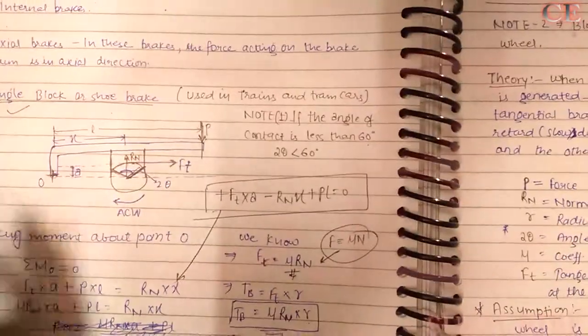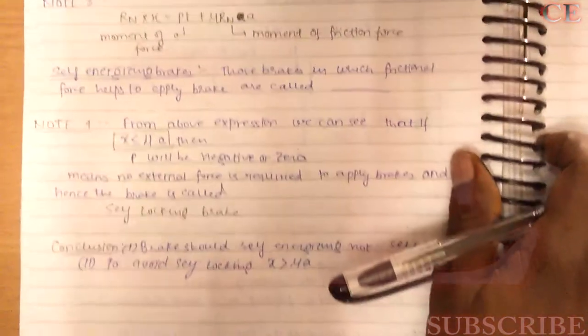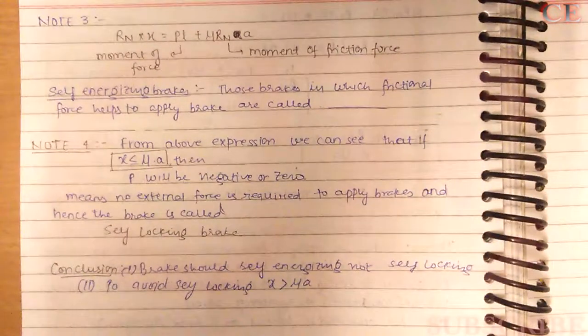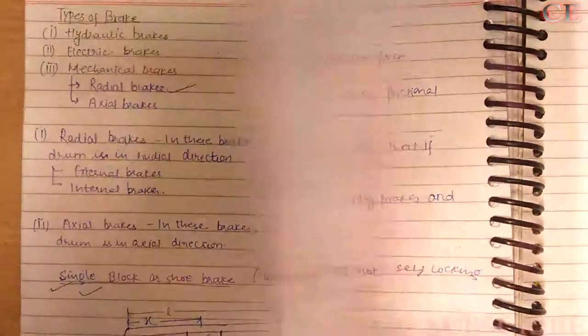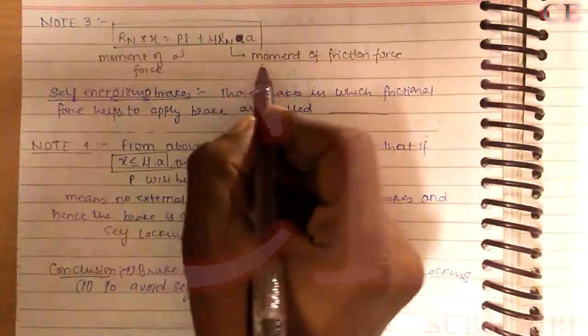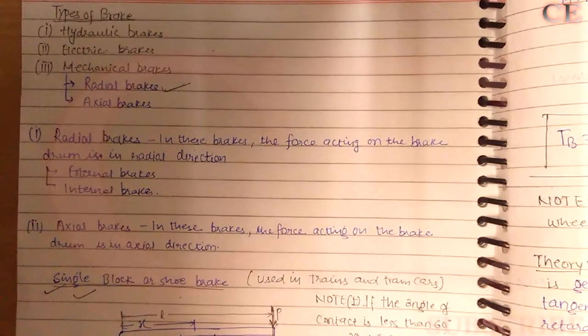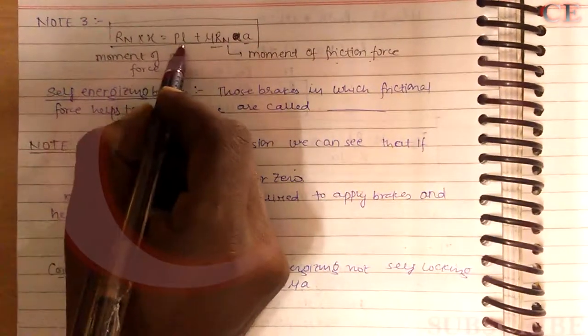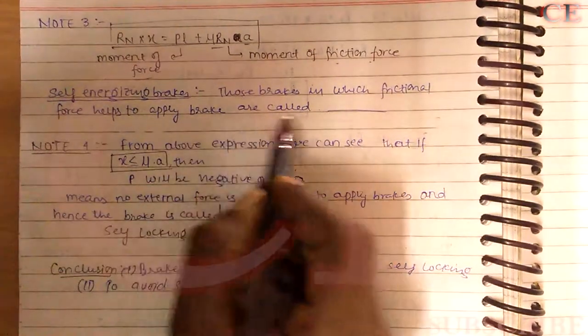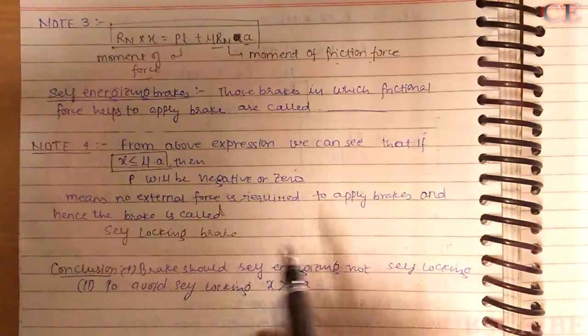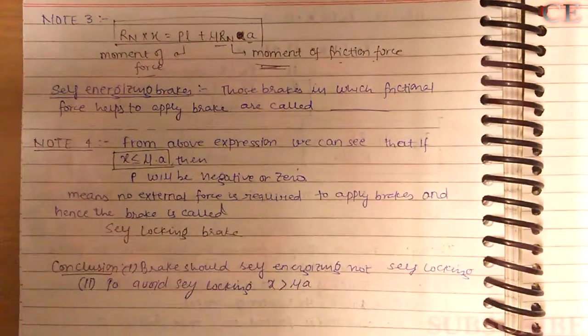One key assumption: the normal pressure between the block and the wheel is uniform — there should be no variation in pressure across the contact surfaces. Now the important part: in the moment equation, the term mu times Rn times a represents the moment of the friction force, and P times l is the moment of the applied force. Brakes in which the frictional force helps apply the brake are called self-energizing brakes.